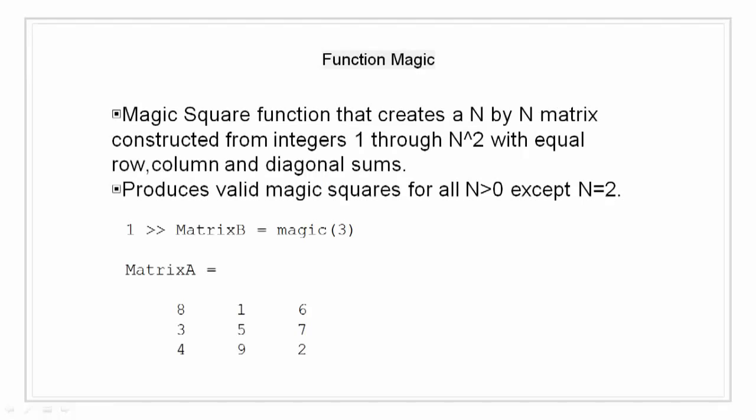Magic function is a built-in function, a magic square function that is an n by n matrix constructed from integers 1 through n raised to power 2 with equal row, column and diagonal sums. This means that the sum of rows, sum of columns are all the same.